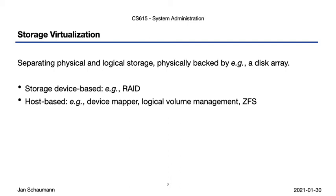When we hear the word virtualization, we often jump to assumptions and think about virtual machines and perhaps cloud services such as AWS. But on a basic level, storage virtualization really boils down to simply separating individual physical storage media from a logical storage unit, meaning we might populate a large disk array with hard drives and then carve that up into virtual disks as needed. This is in a way the inverse approach from dividing a single hard drive into separate partitions, a concept we'll discuss in more detail in the next video.